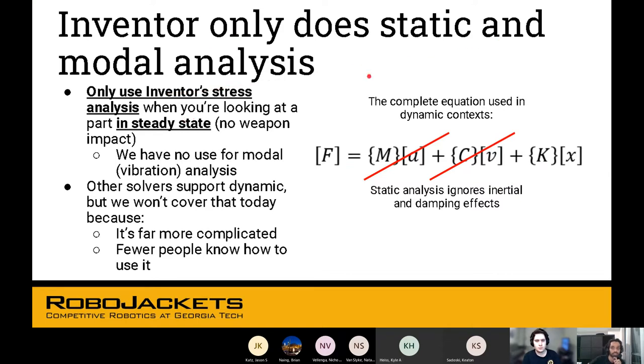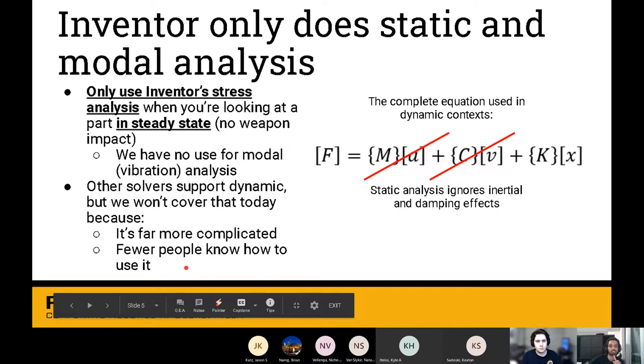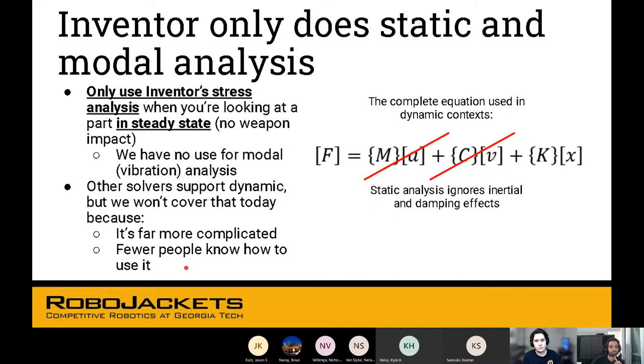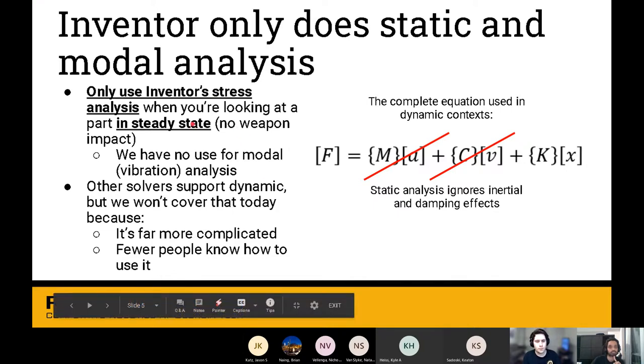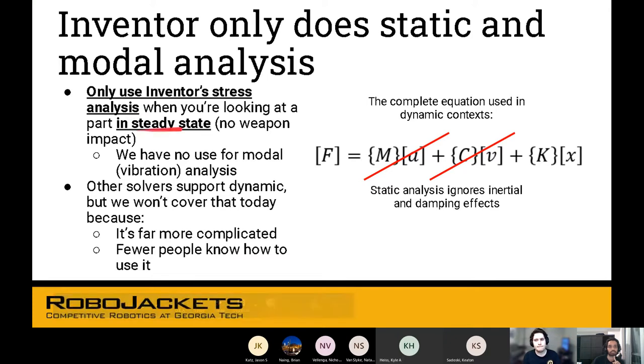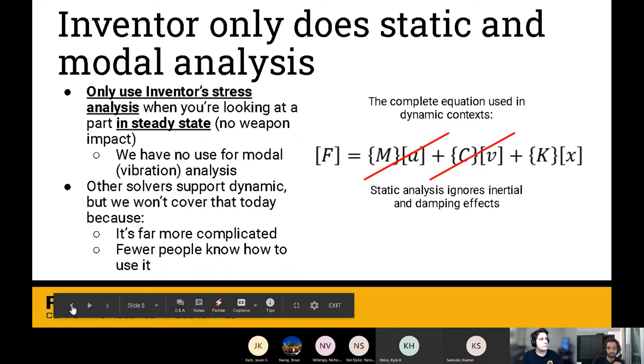This is the equation for forces. You have an acceleration, you have damping factors. These are excluded when you're only doing static analysis. Inventor is only good for static and modal analysis. There are other softwares for FEA, such as Ansys and Abaqus, that can do more complex stuff, but we don't really use that in RoboJackets. We also don't really need modal analysis, which is used for vibration stuff.